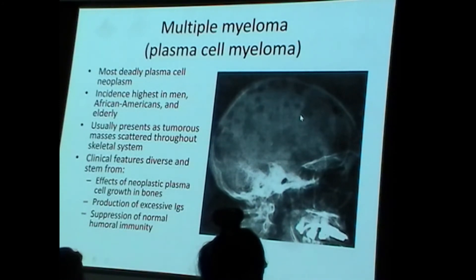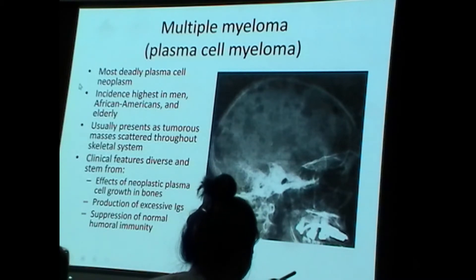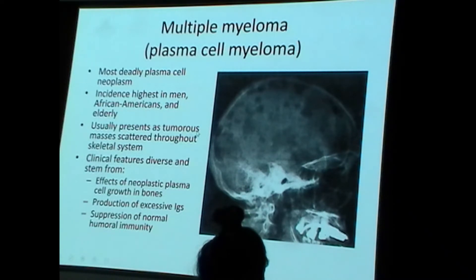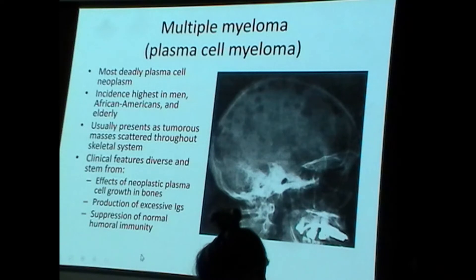Now that we've learned some basics about plasma cell cancer, let's learn about multiple myeloma, or plasma cell myeloma. This is the most lethal plasma cell cancer, with a predilection for elderly African American males. As the name would suggest, it usually presents as tumorous masses scattered multiply throughout the skeletal system. Clinical features are variable and relate to cancer growing in the bones, excess M-protein production, and suppression of the normal immune system by the cancer's plasma cells.